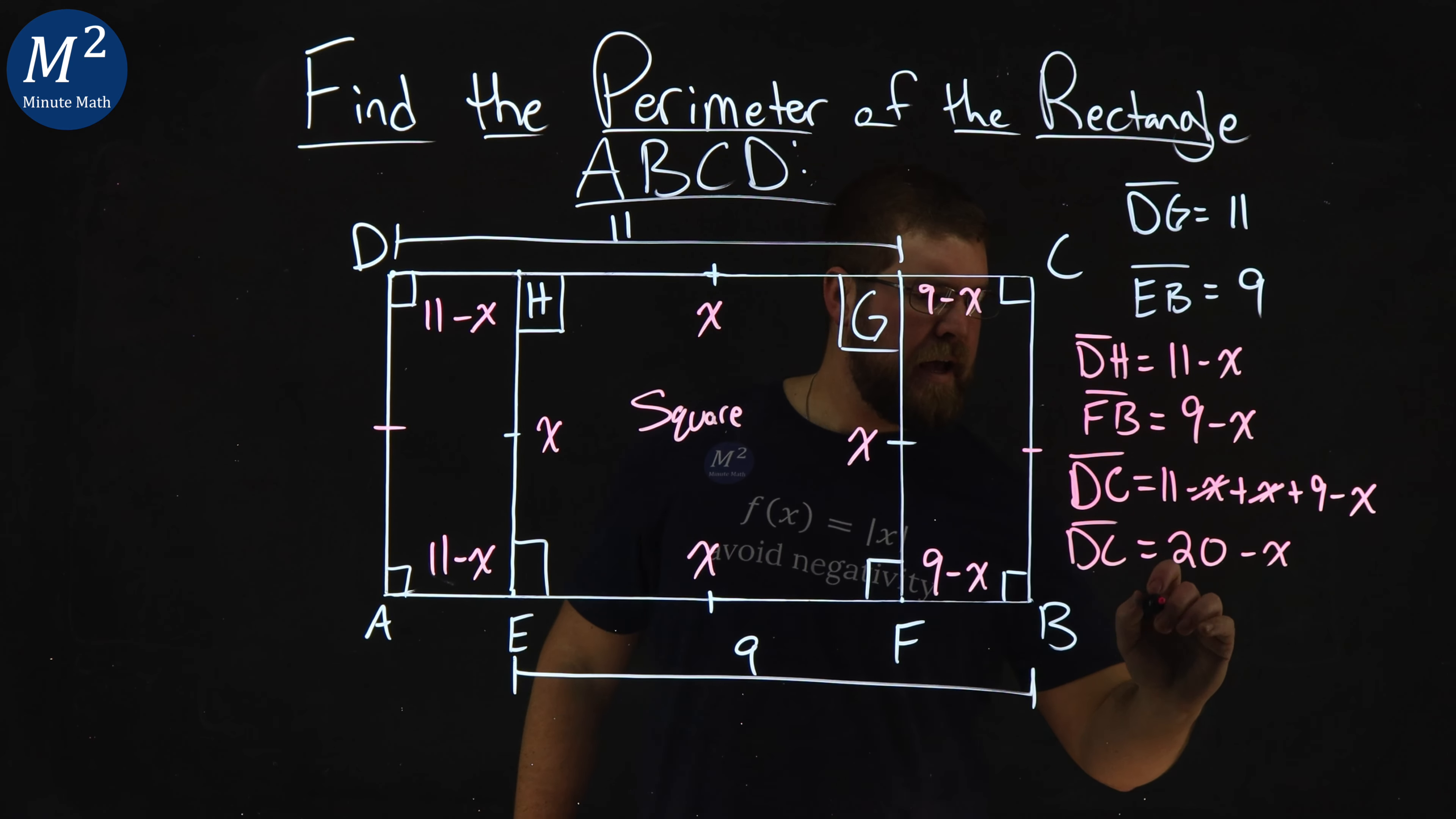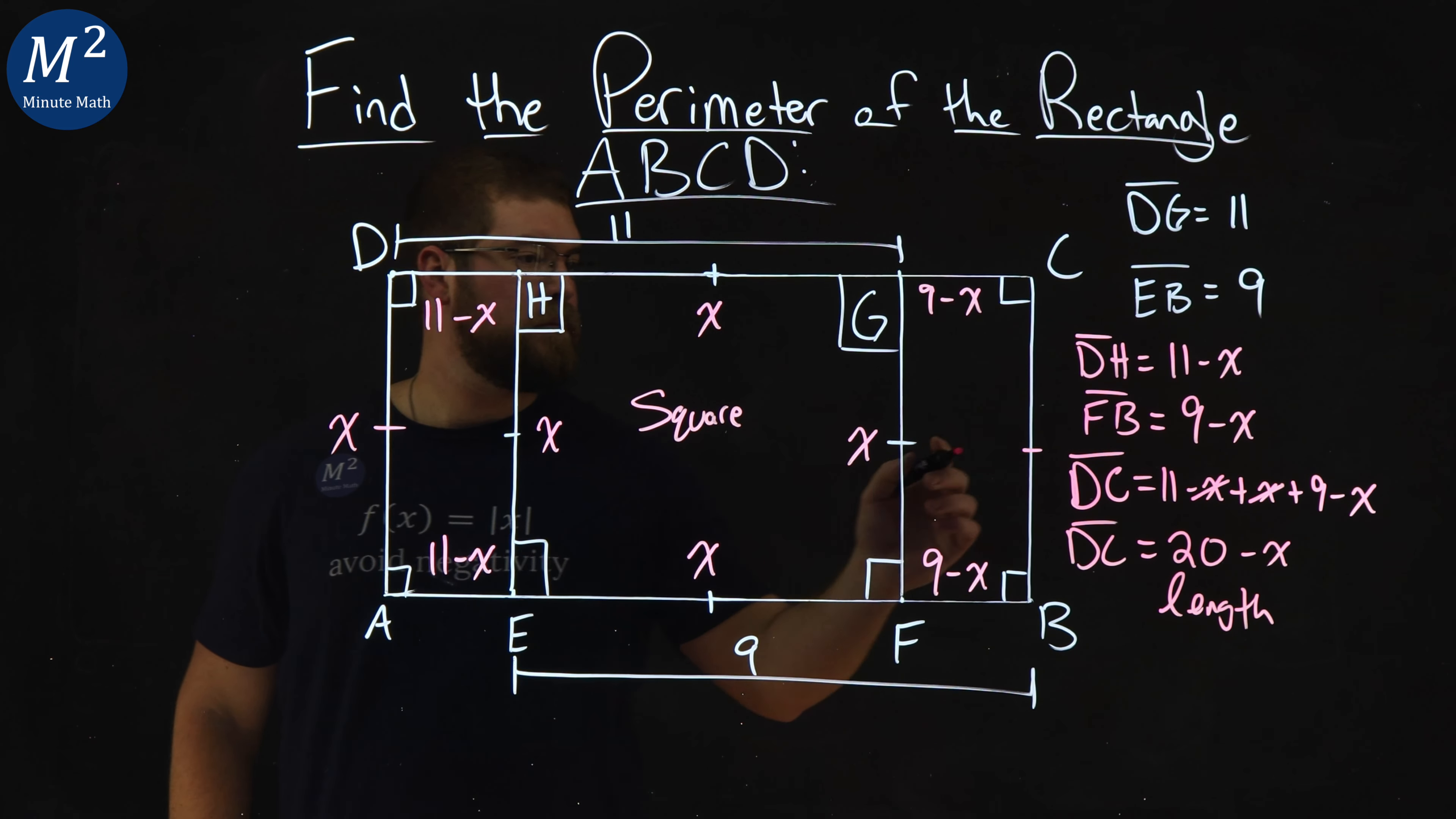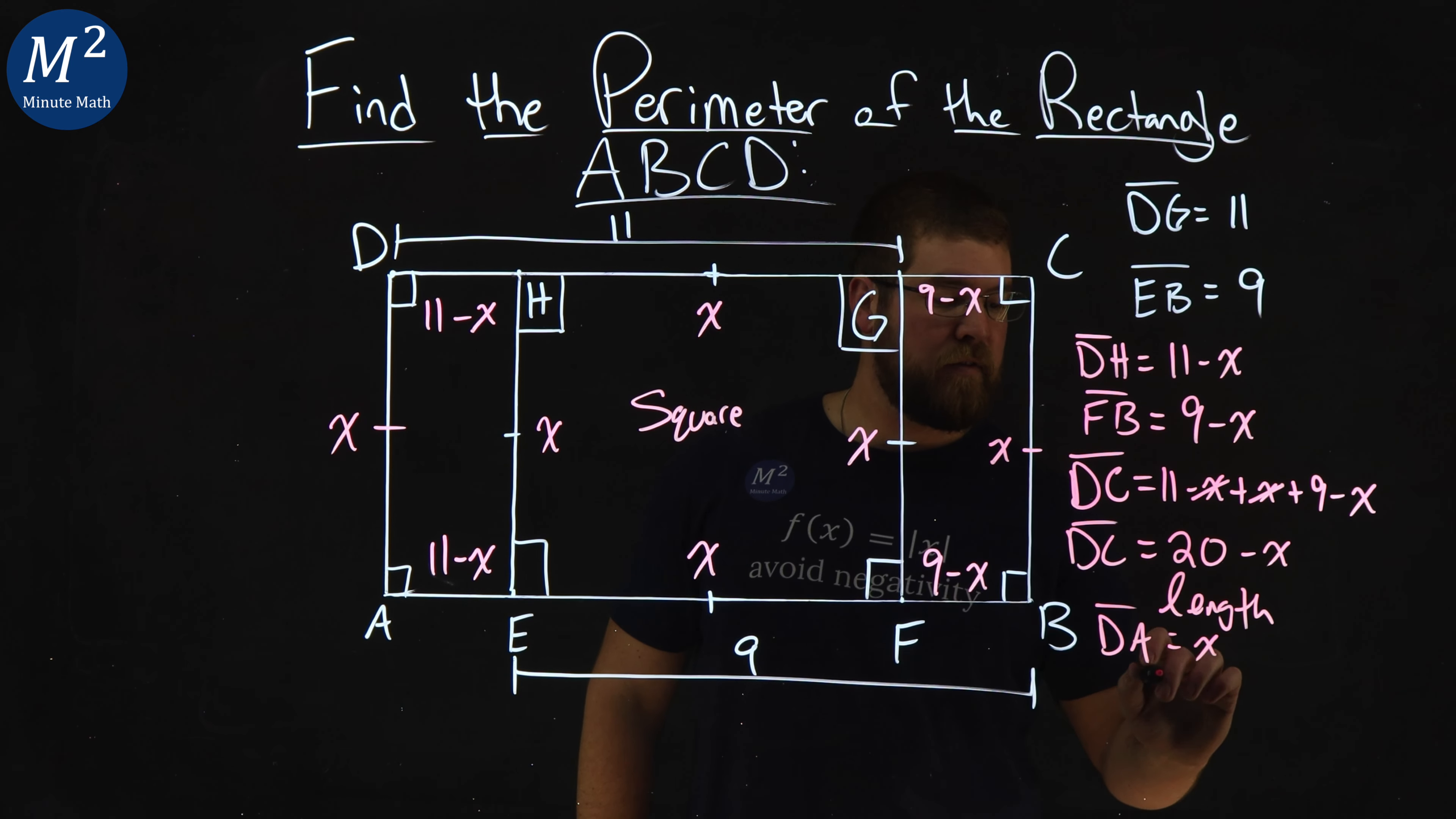What's the width? So, this is the length. And then what's the width? The width here, well, actually, we can label it here, right, as X. So, the length is 20 minus X. The width, DA, the length of DA is just X, and that's our width.